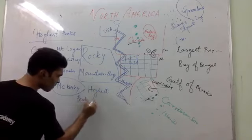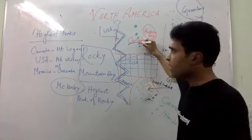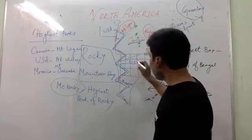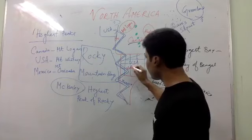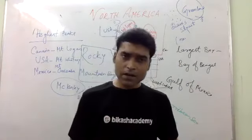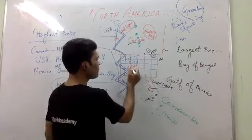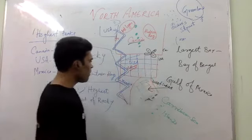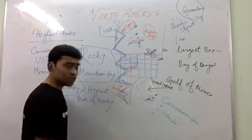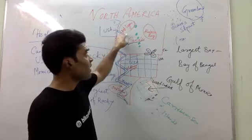Let me explain again clearly. The highest peak of Canada is Mount Logan. The highest peak of USA is Mount Whitney — near Death Valley. Death Valley is the deepest point of North America. And the highest peak of Mexico is Mount Orizaba. For the Rocky Mountains, the highest peak is Mount McKinley.